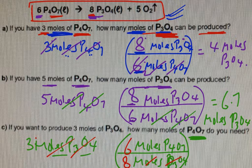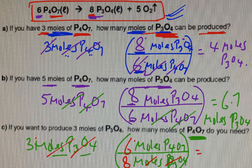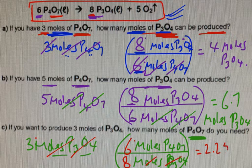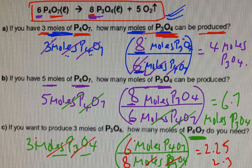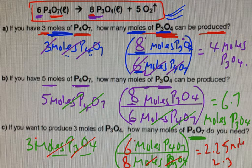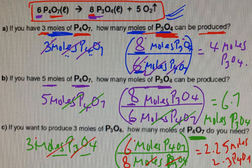So you have 3 times 6, that's 18. 18 divided by 8 is approximately 2.25. Or if you want to go to 1 decimal place, 2.3. The answer is in moles of the substance P₄O₇, and you're done. You move on.